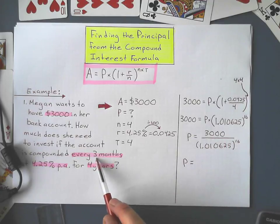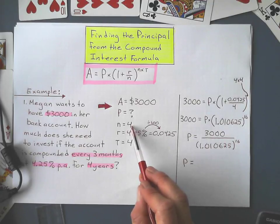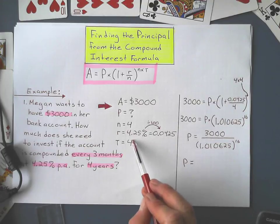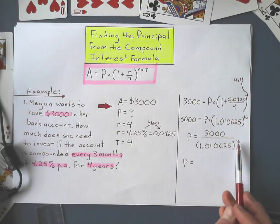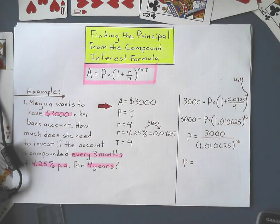Well, if it's compounded every three months, that means it's compounded four times a year, and we're leaving it in the bank for four years, so that means your principle is being compounded 16 times in that four years.